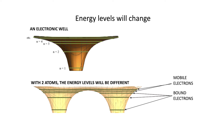If we have two atomic nuclei a certain distance apart, then some of the electrons — particularly those in the lower orbits — will remain bound, but some electrons, particularly those in the higher orbits, will be able to move around the entire system. Because we have two atoms, we now have twice the number of electrons and therefore twice the number of possible energy levels.